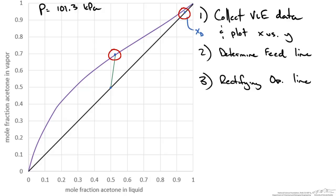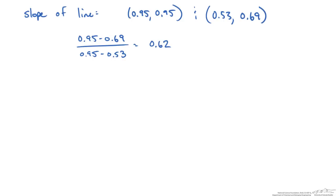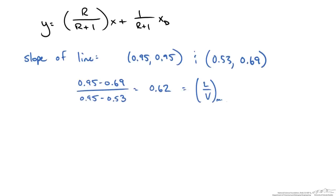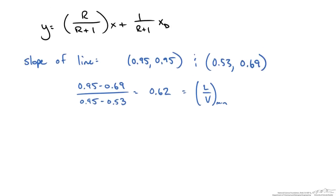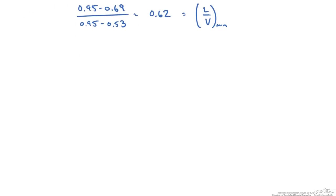Now that I have these two points, you would want to determine the slope of a line through them. The reason this is our L over V min is that recall the equation for our operating line in this section has that form, and the slope is L over V. By drawing this line associated with infinite stages and minimum reflux, we can determine our actual L over V.